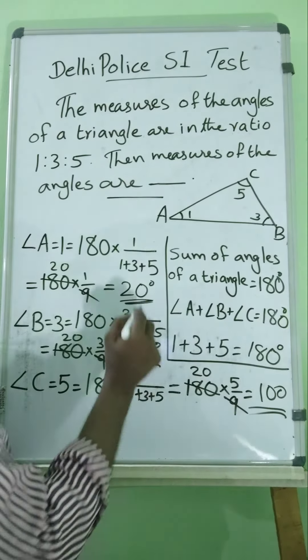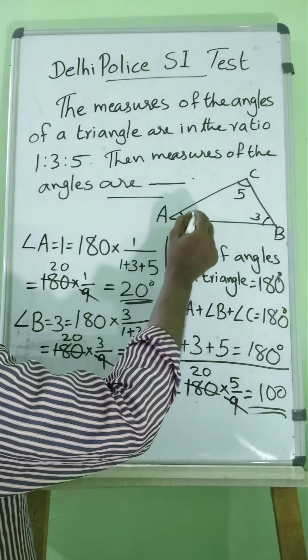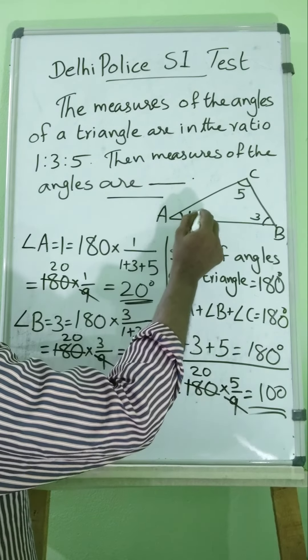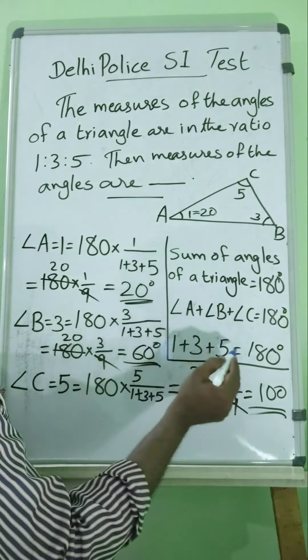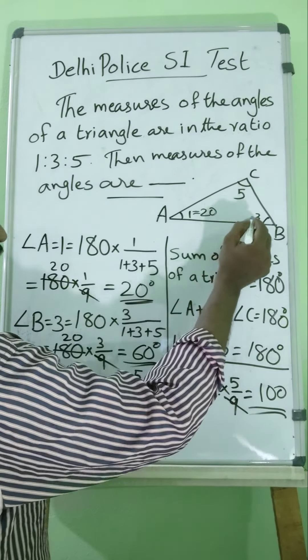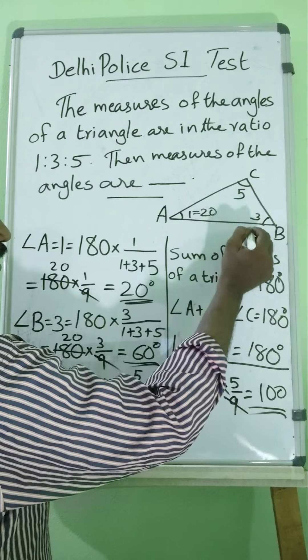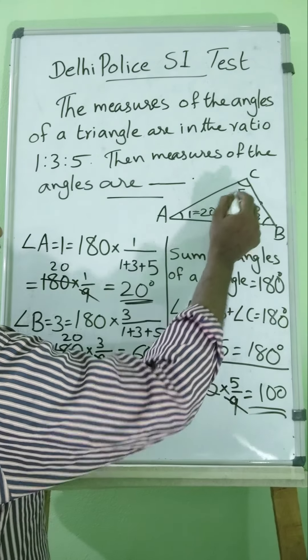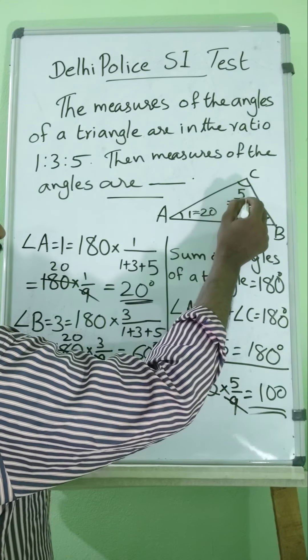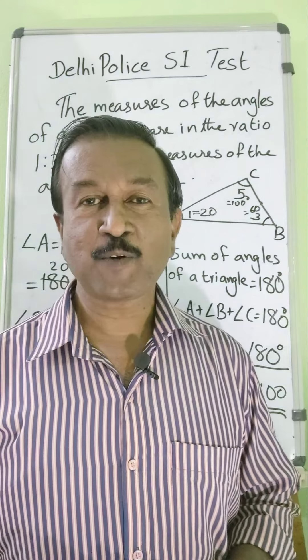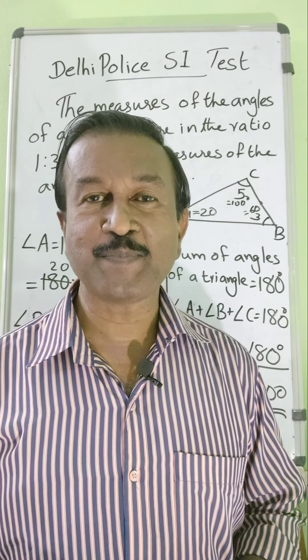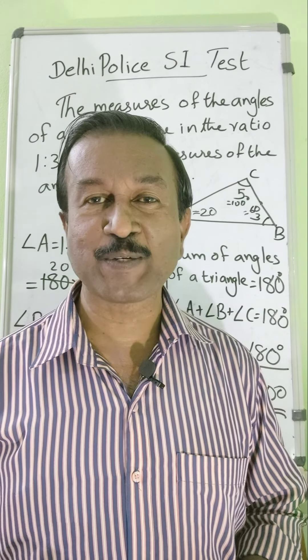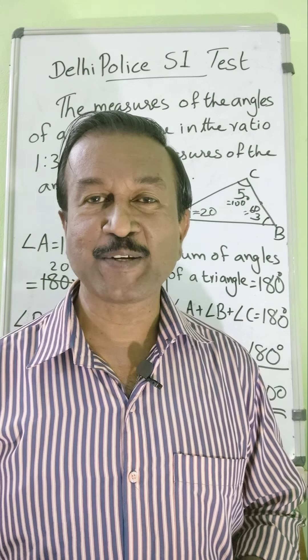So the answers we got are: Angle A equals 20 degrees, Angle B equals 60 degrees, and Angle C equals 100 degrees.